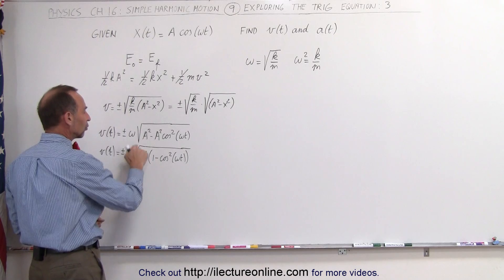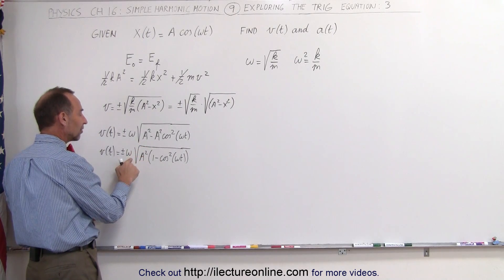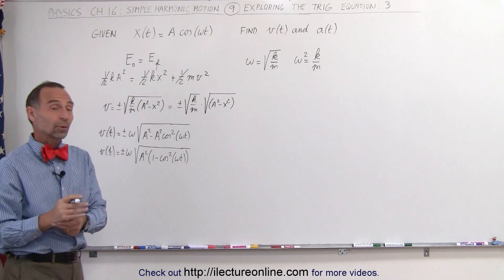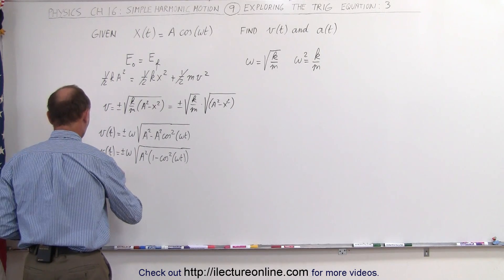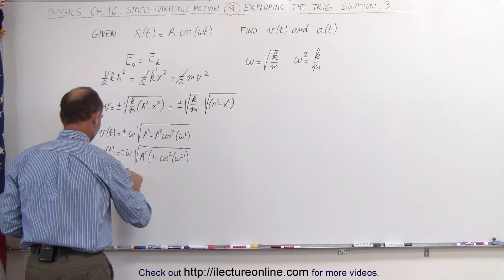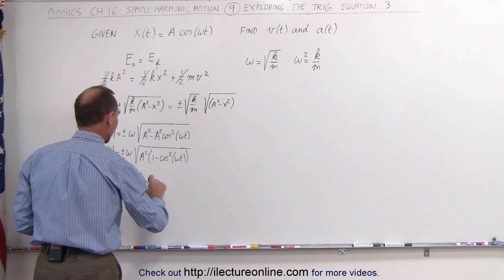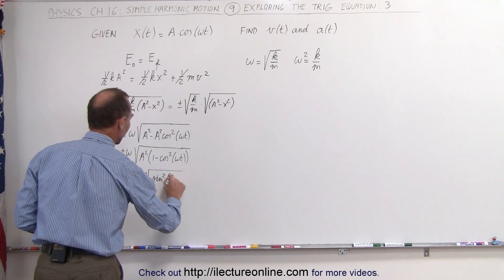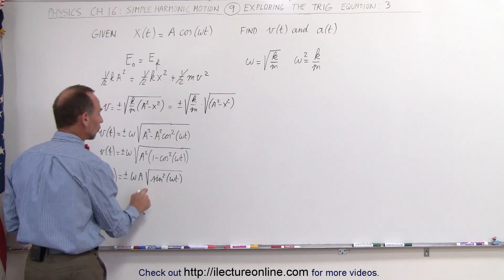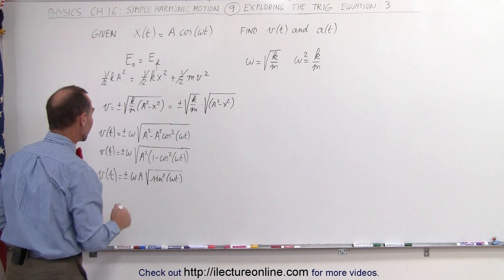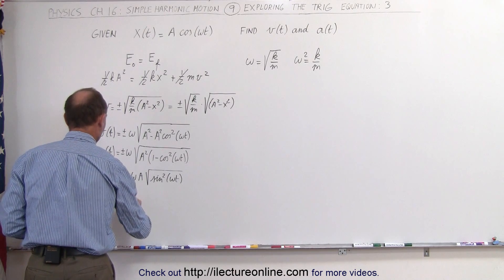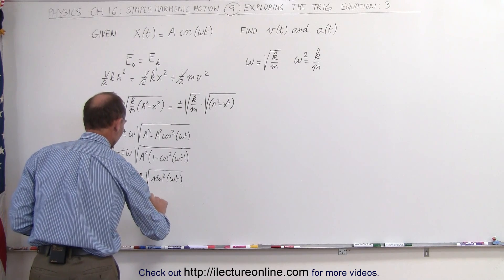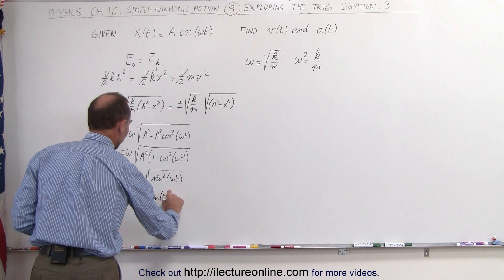Now, A squared — take the square root of that — we can move that outside the radical. And 1 minus the cosine squared of omega t can be written as the sine squared of omega t. So we have V as a function of time equal to plus or minus omega times A times the square root of the sine squared of omega t. The square root of that is simply the sine of omega t. So V as a function of time equals plus or minus omega times A times the sine of omega t.